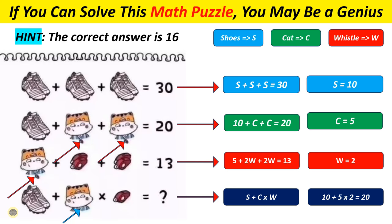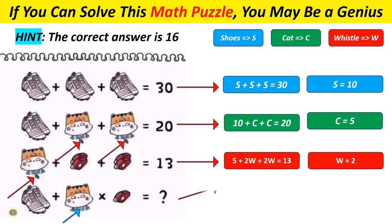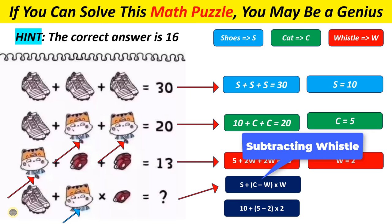Just change the last equation to S plus C minus W times W. Now plug the numbers in. 10 plus 5 minus 2 times 2. Work your way through it. The equation goes to 10 plus 3 times 2, then 10 plus 6, finally you get 16. That problem is solved.